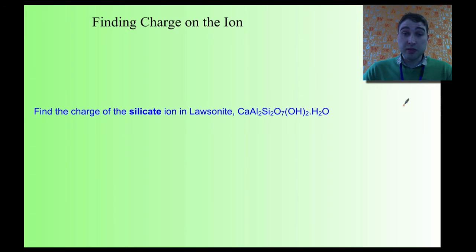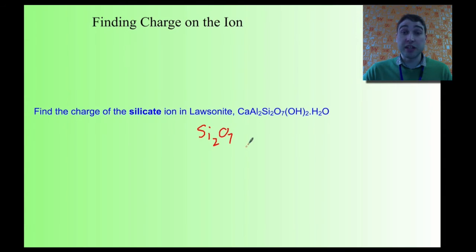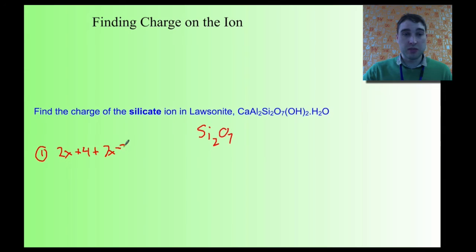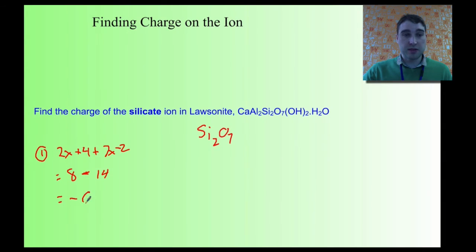We'll do another example — we'll look at lawsonite. This is a silicate ion specifically, so we're not going to include the aluminium in our calculation. The silicate ion there is Si2O7. We need to find the charge on that. We've got two times the oxidation number of silicon, which is plus four, and seven times the oxidation number of oxygen, which is minus two. Two times plus four is eight; seven times minus two is fourteen. Eight minus fourteen is minus six. So that gives us our charge on the ion as minus six.